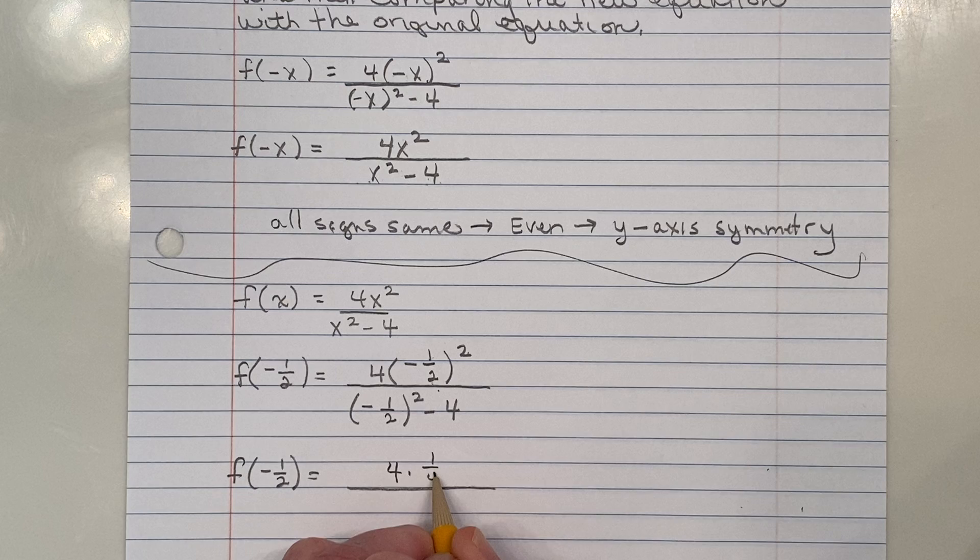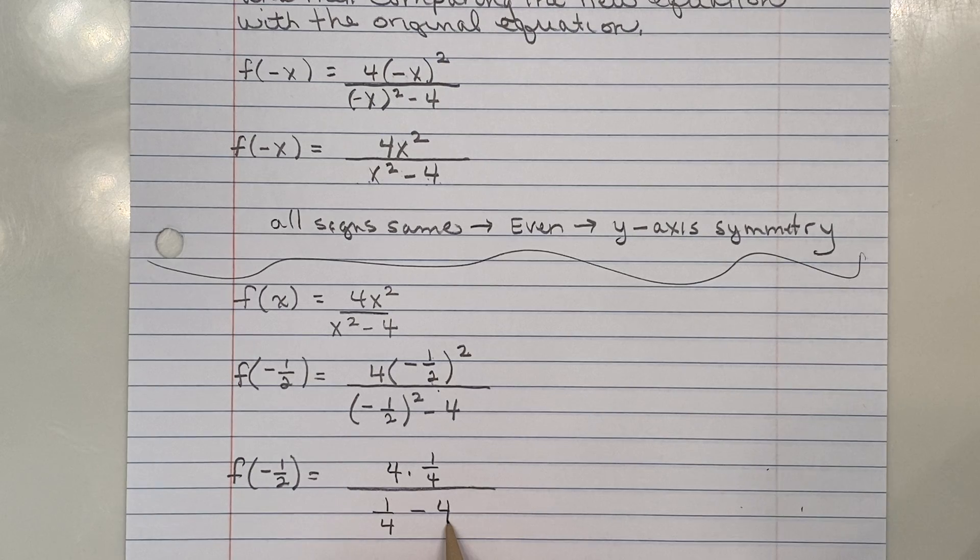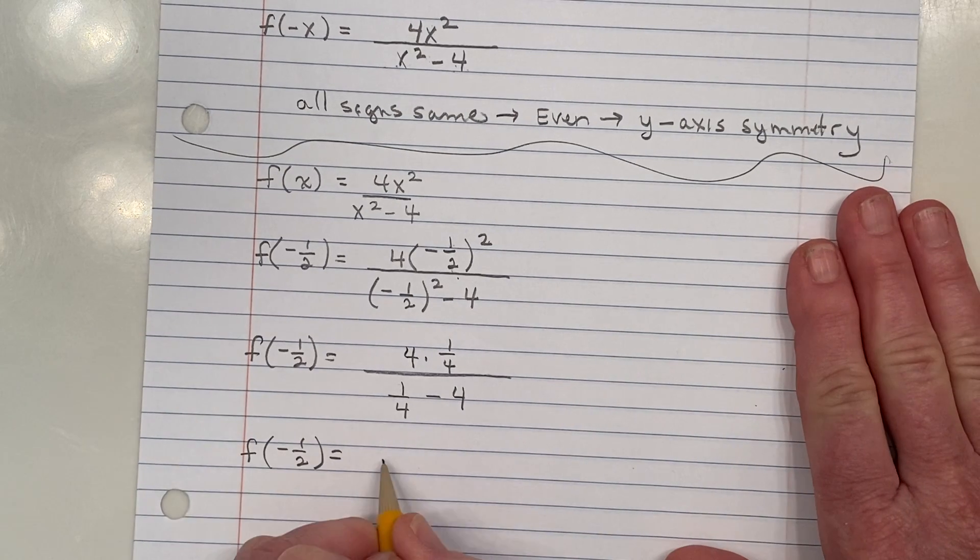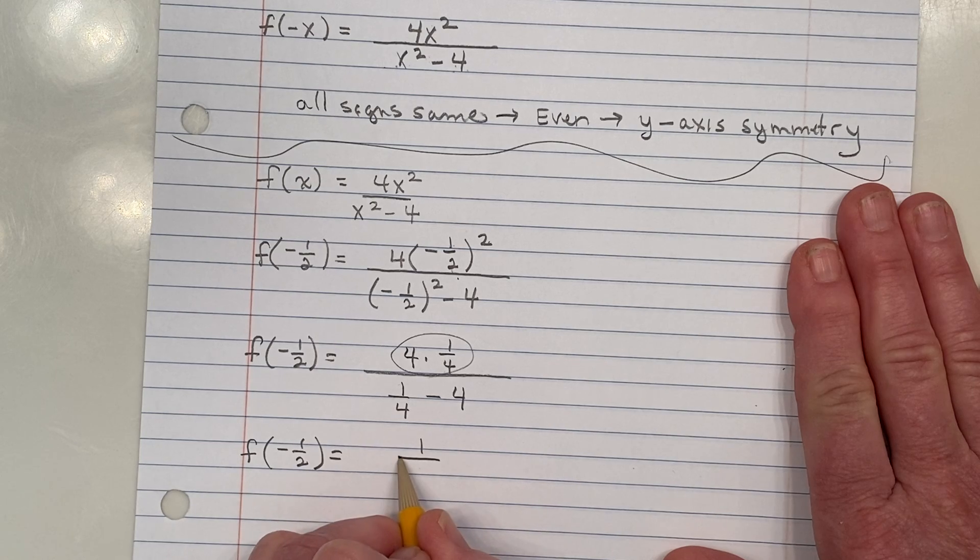So on top, I'm going to have four times one-fourth. And then down here, when I square negative one-half again, I'm going to get positive one-fourth minus four. Alright, I'm going to keep going without a calculator until I feel like I need to pick one up. So in the numerator, when I multiply, I'm going to get four times one-fourth is one over.